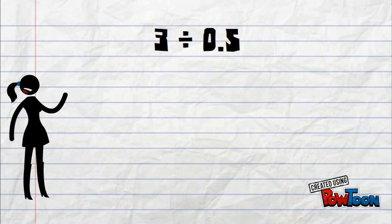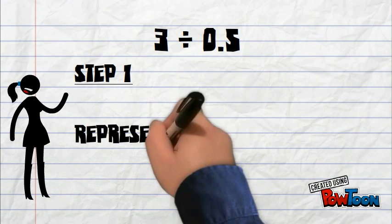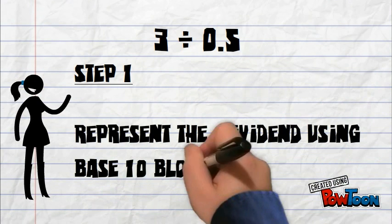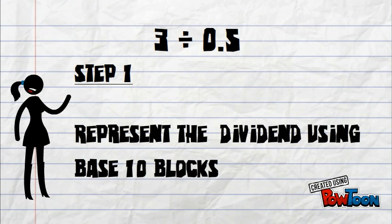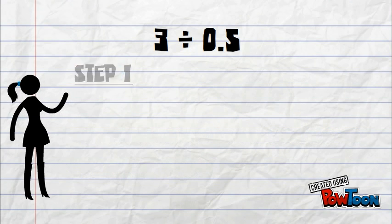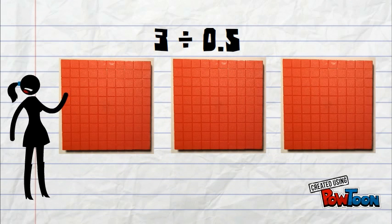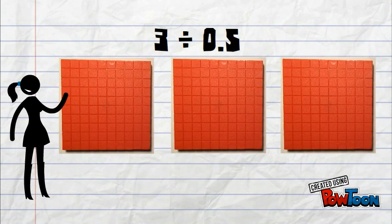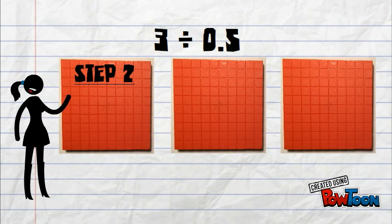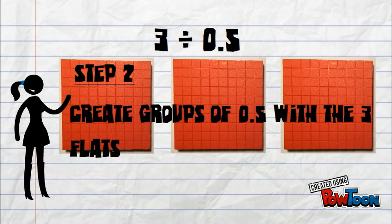Now we will see the first step on how to divide 3 by 5 tenths. The first thing we must do is represent the dividend using base 10 blocks. Here we have 1 flat, 2 flats and 3 flats. After we have completed the first step, we must now proceed to the second step. We shall create groups of 5 tenths with the 3 flats.